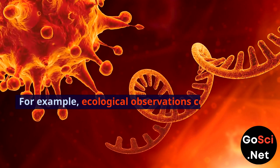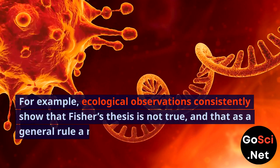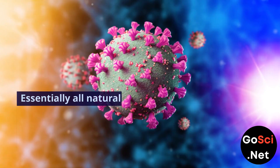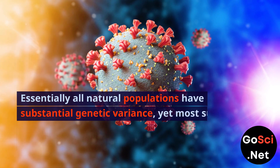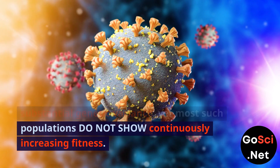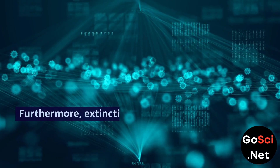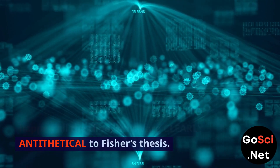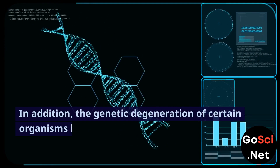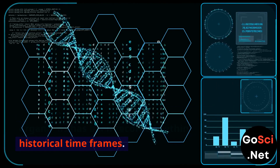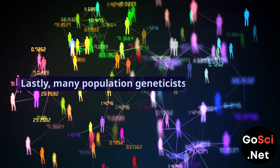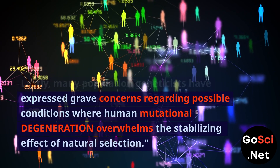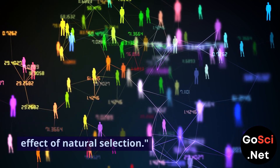For example, ecological observations consistently show that Fisher's thesis is not true, and that as a general rule, a natural population's fitness is static. Essentially all natural populations have substantial genetic variants, yet most such populations do not show continuously increasing fitness. Furthermore, extinctions and near-extinctions happen all the time, which are clearly antithetical to Fisher's thesis. In addition, the genetic degeneration of certain organisms has been recorded within historical timeframes. Lastly, many population geneticists have expressed grave concerns regarding possible conditions where human mutational degeneration overwhelms the stabilizing effect of natural selection.